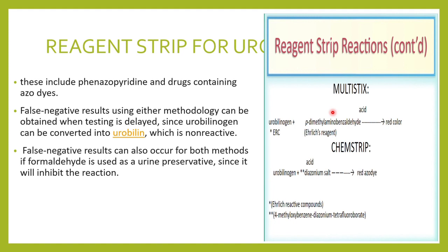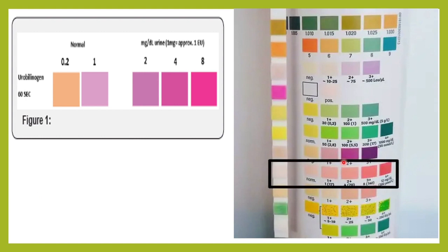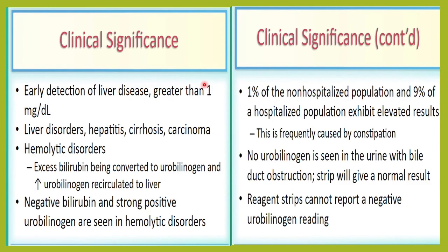When using a urine dipstick, the results are reported in a range from 0.2 to 8 milligrams per deciliter based on color variation. Normal urobilinogen is between 0.2 to 1 mg/dL, and values of 2, 4, or 8 would indicate abnormal urobilinogen in the urine.